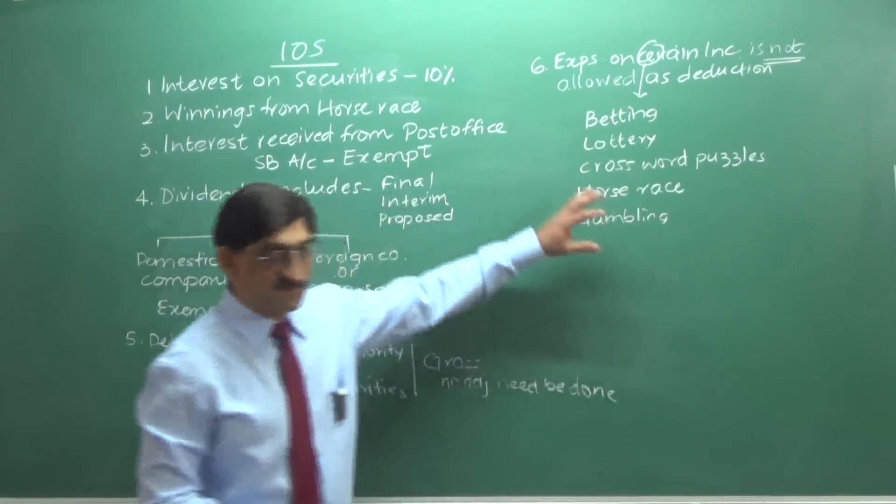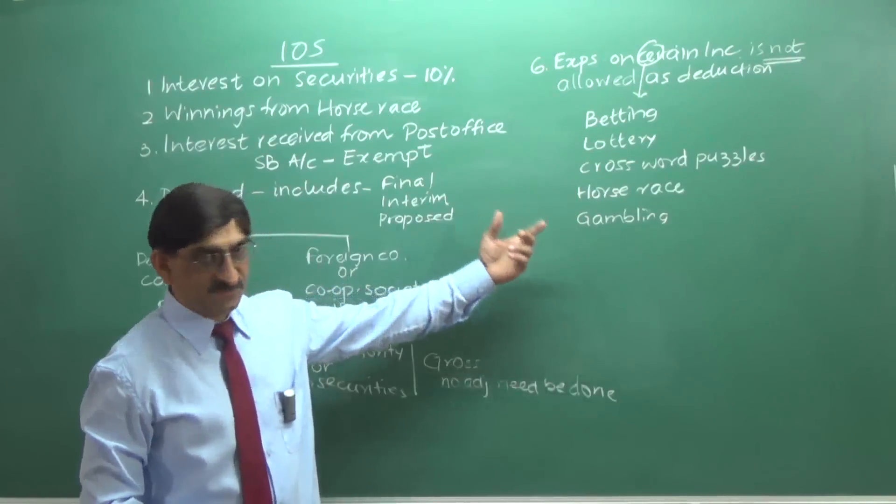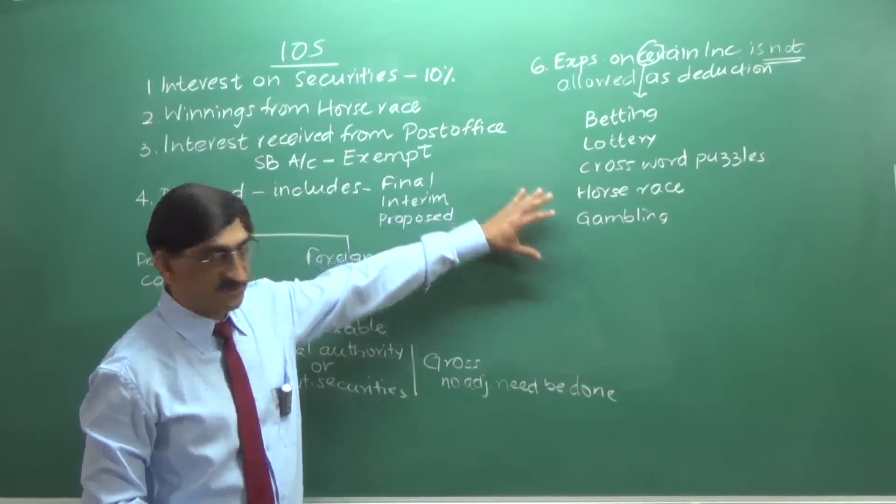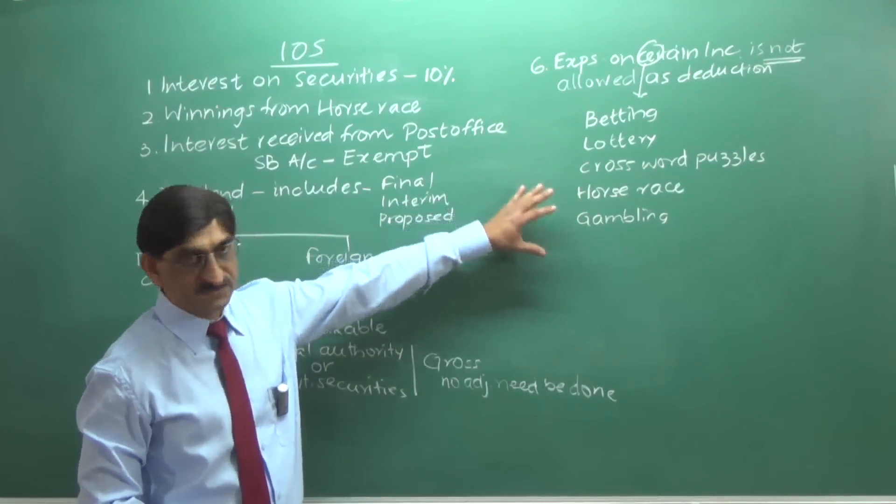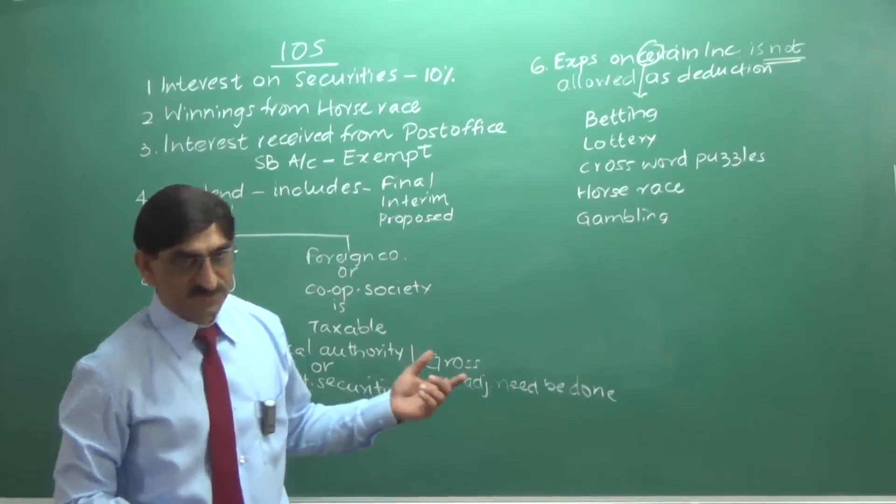These are the five sources of income. If it's earned and certain expenses spent for earning this income, these expenses will not be allowed as deduction. This is a very important thing.